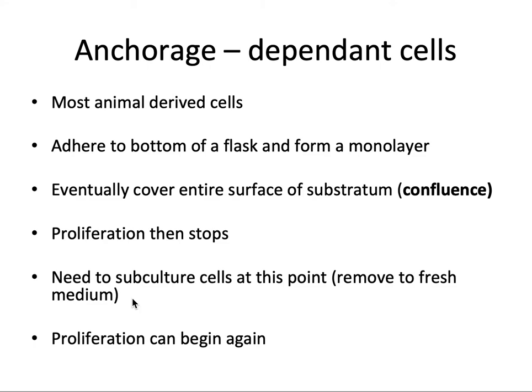Most animal or human body cells are anchorage dependent. They adhere to the bottom of the flask to form a monolayer, and once the monolayer is formed and starts forming a bilayer, the cells start to die. Once the cells cover the entire surface, that is called confluent — that's the time we need to do subculturing. Proliferation then stops and needs to be subcultured at this point; after removing the old media and adding fresh media, proliferation can begin again.